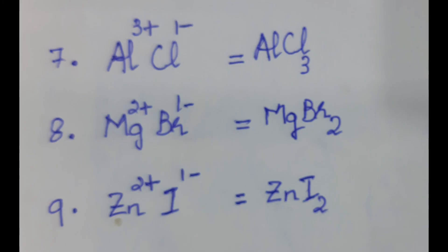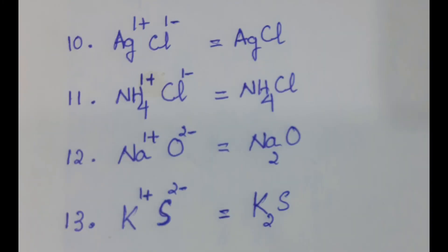Number 8, magnesium bromide: MgBr2. Number 9, zinc iodide: ZnI2. Number 10, silver chloride: AgCl. Number 11, ammonium chloride: NH4Cl. Number 12, sodium oxide: Na2O. Number 13, potassium sulfide: K2S.